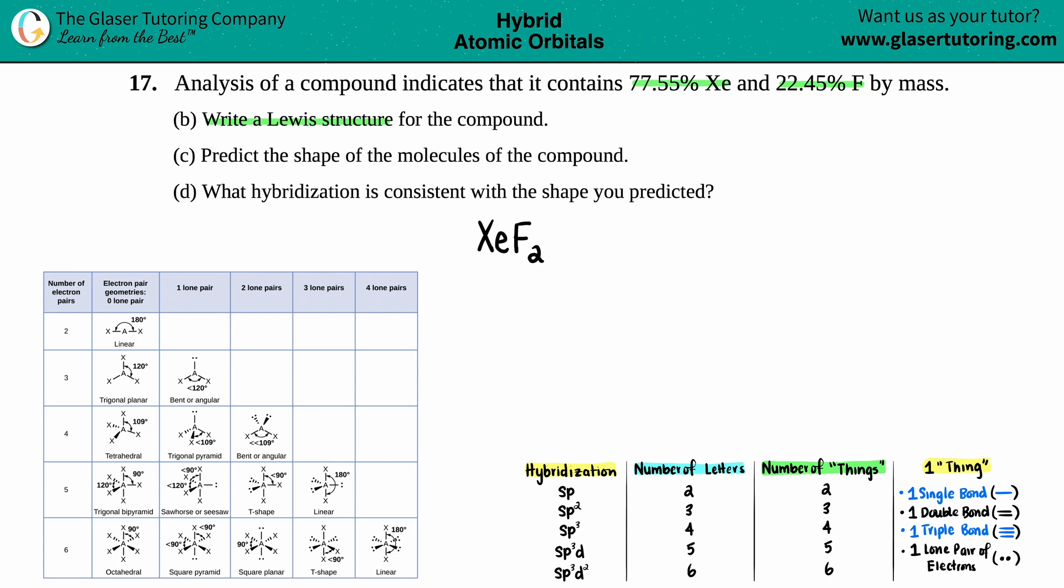So this is pretty straightforward. Your Lewis structure is always going to be the least electronegative in the middle. Between xenon and fluorine, fluorine is the most electronegative element, so xenon has to go in the middle surrounded by the two fluorines. I'll put one fluorine on the top and one fluorine on the bottom.